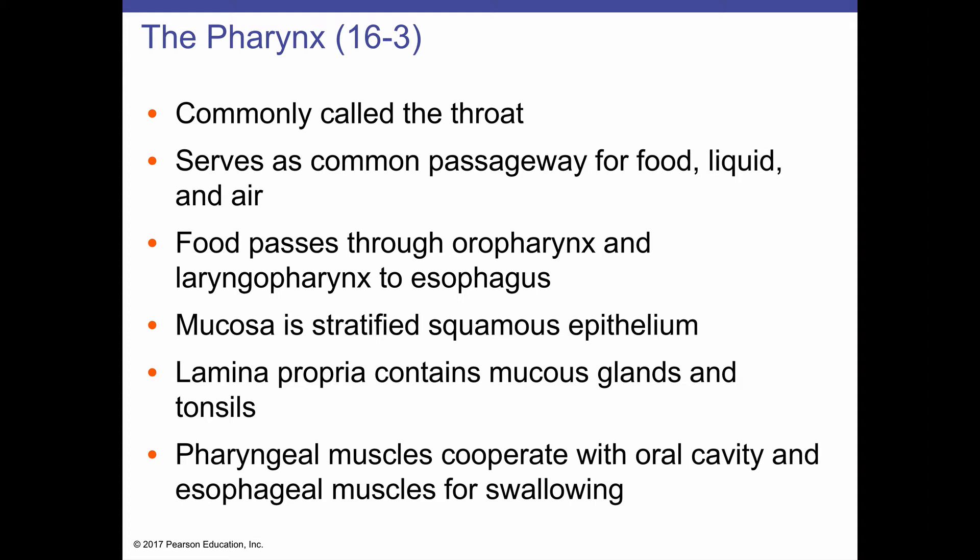Food passes primarily through the oral pharynx and laryngopharynx. For that reason, the mucosa in these portions is a little different compared to the nasopharynx, because these portions have to deal with the abrasion of food. Therefore, the epithelium is a stratified squamous epithelium. Deep to the epithelium, the lamina propria has mucus glands and several sets of tonsils, which we'll see on the upcoming slides.